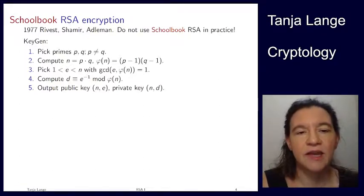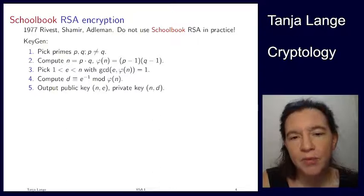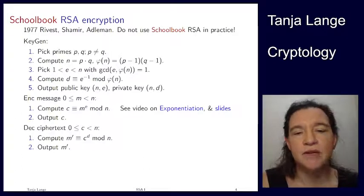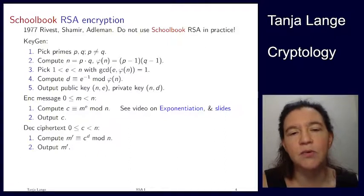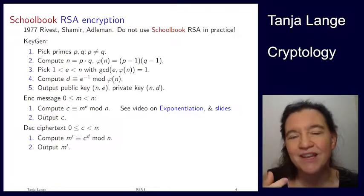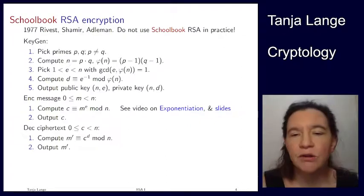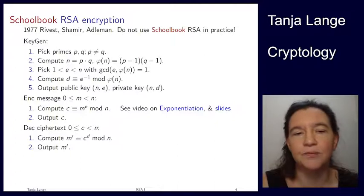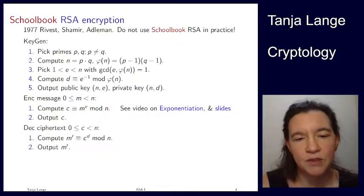After key generation, the public key is (n, e) and the private key is (n, d), where d is the secret exponent and n is shared. Encryption simply takes the message to the e, computed modulo n, to give the ciphertext: c = m^e mod n. That's why we want e to be sparse — using the square-and-multiply method, a sparse exponent makes exponentiation efficient. Decryption takes the ciphertext to the power d modulo n: m' = c^d mod n.